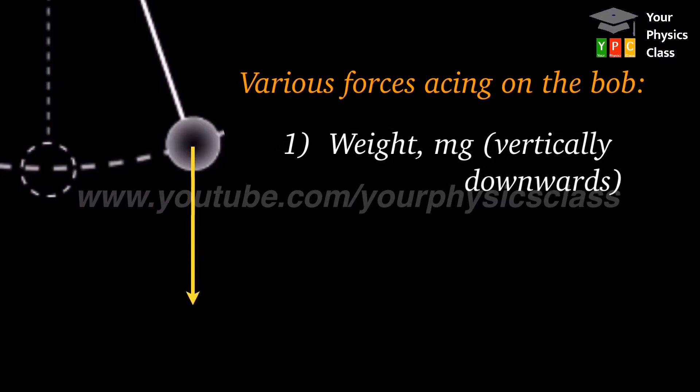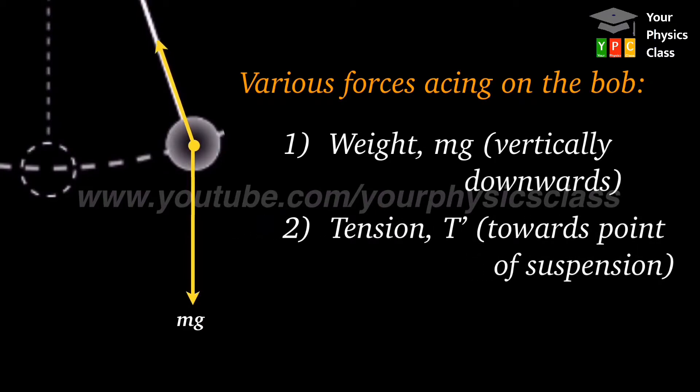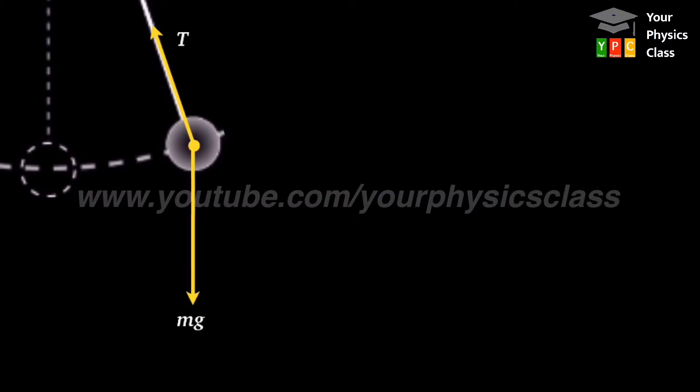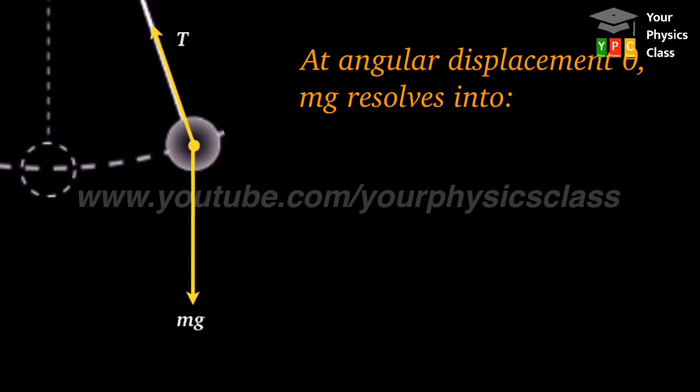The various forces acting on the bob are the weight of the bob which is always directed vertically downward and tension which acts along the string and directed towards point of suspension. When the bob makes some angular displacement theta, then its weight is resolved into two components.